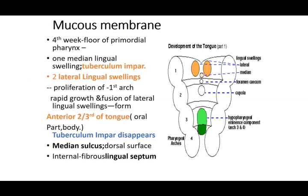First is the mucous membrane developing on top. The bulk of the tongue starts forming from the fourth week of development, in the floor of the primordial pharynx at the foramen cecum. In front of the foramen cecum, at the level of the first pharyngeal arch, the first swelling to arise is one median swelling — called the medial lingual swelling or tuberculum impar.